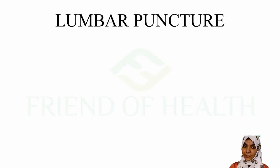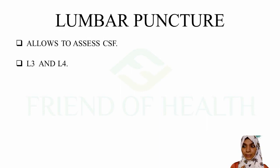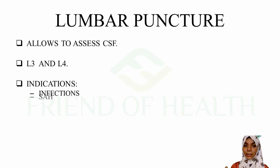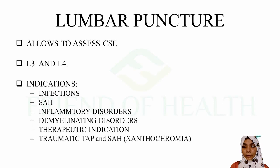Lumbar puncture is done to identify pathologies and assess CSF. It is performed between L3 and L4 vertebrae. Indications include infections, subarachnoid hemorrhage, inflammatory disorders, demyelinating disorders, and therapeutic indications such as drug instillation. An important distinction: in traumatic tap you get blood-tinged CSF, whereas in subarachnoid hemorrhage you find xanthochromia.